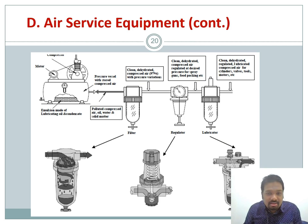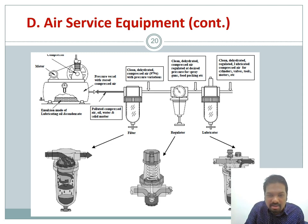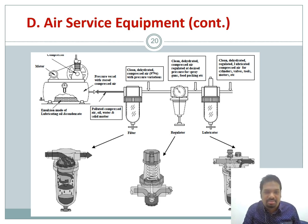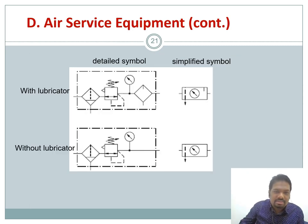The filter has a filter element that filters out unwanted contaminants before the air passes to the outlet. The air pressure regulator has an internal mechanism to increase or decrease pressure to the desired level. The lubricator lubricates valves, actuators, tools, and motors. The FRL unit symbols — with and without lubricator — are used in pneumatic circuit diagrams.